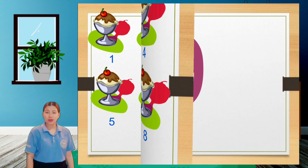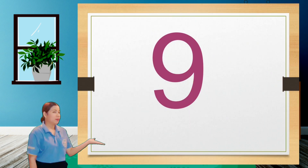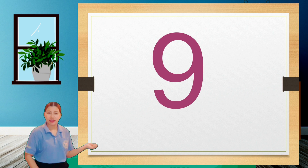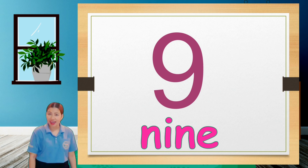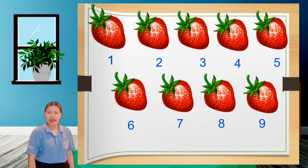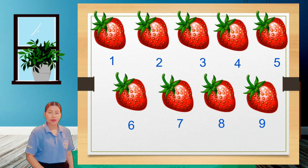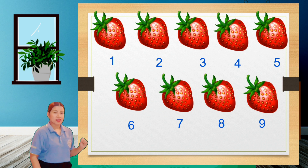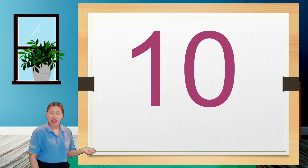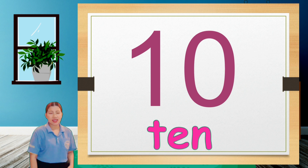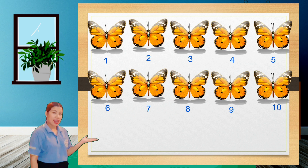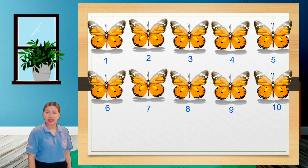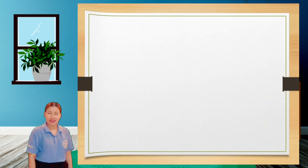Next, number nine. Let's spell N-I-N-E — nine. Look at the pictures — there are nine strawberries. Next is number ten. Let's spell T-E-N — ten. There are ten butterflies. Will you repeat after me? There are ten butterflies.